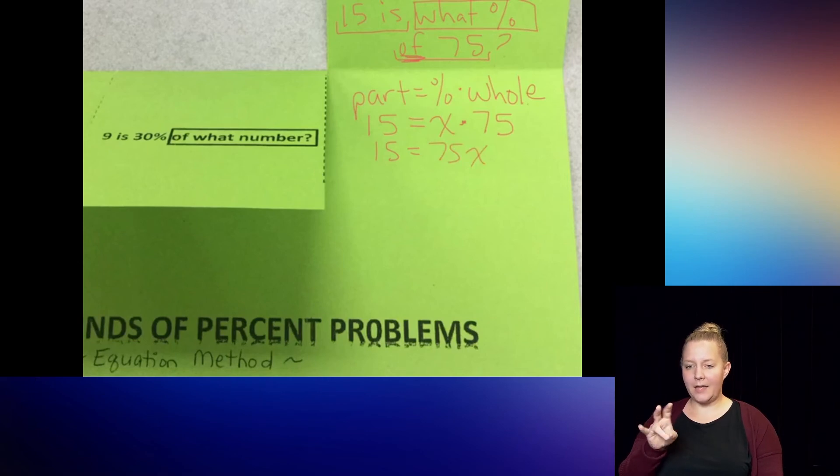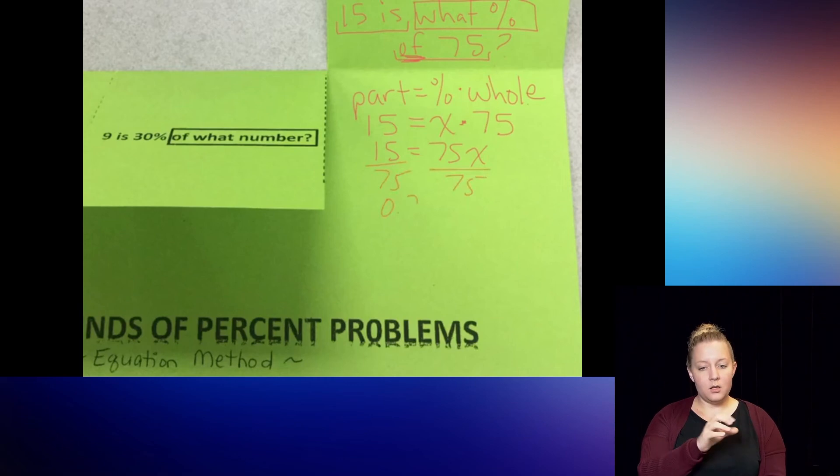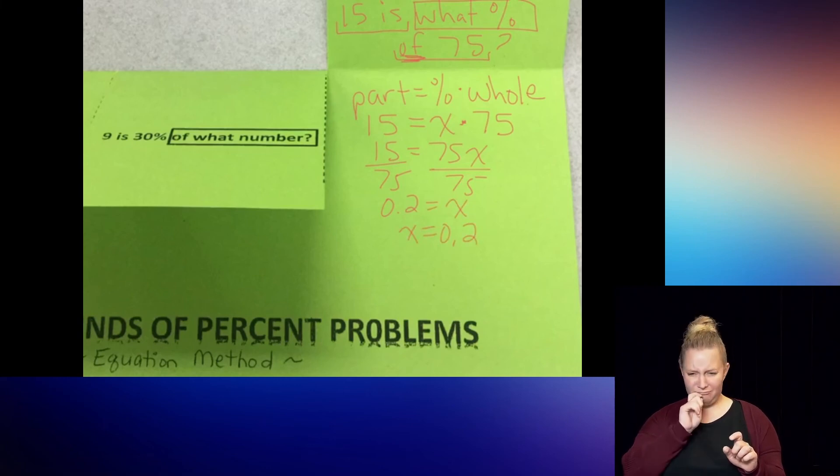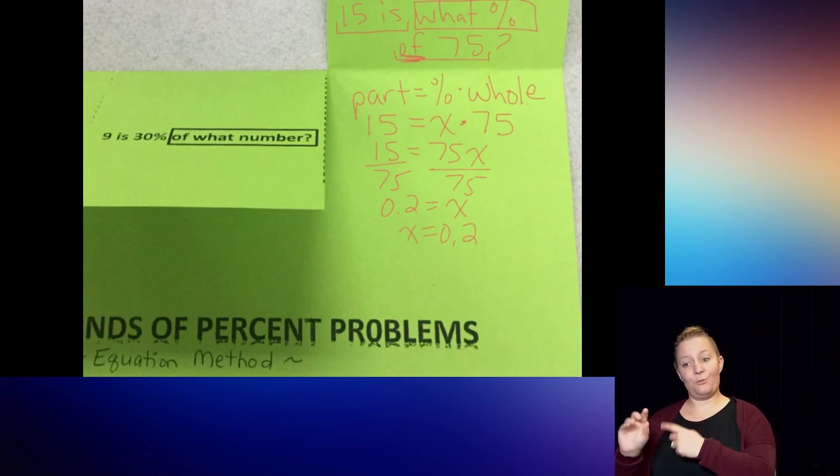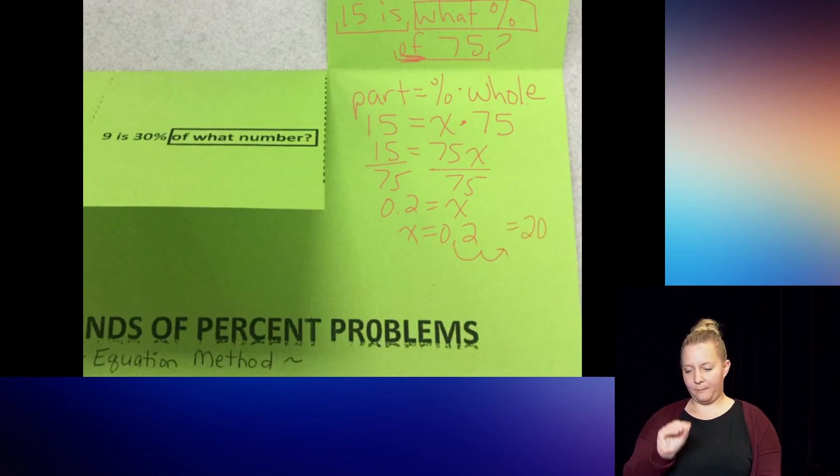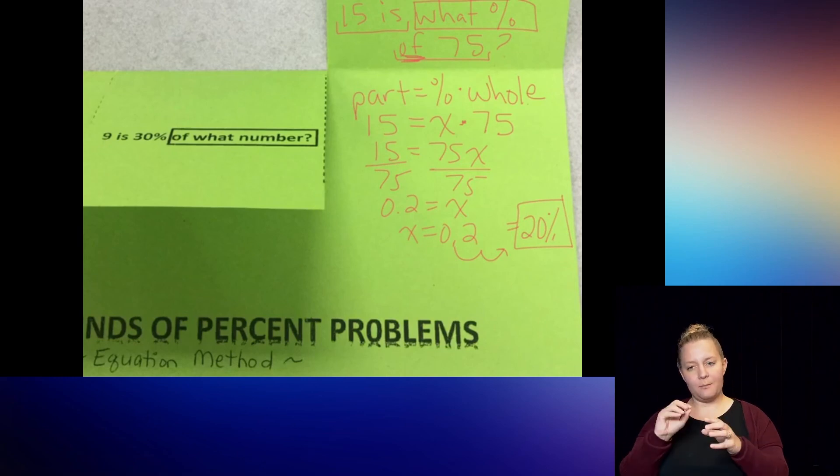So if I was going to simplify this down, I would have 15 equals what is x times 75 again? That is 75x. The x is being multiplied by 75. So I'm going to divide by 75, and I have to do it on both sides. So I get 0.2 equals x. So x equals 0.2. But that's a decimal. The question doesn't ask me what is the decimal. The question asks me what is the percent. So do you remember how to change that decimal to a percent? You just make two hops to the right. So my final answer will be 20%.